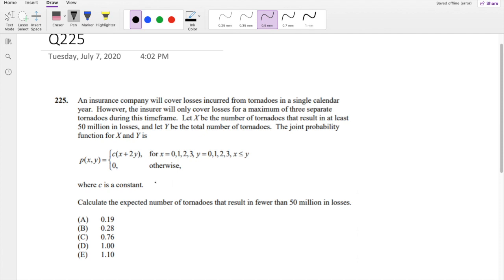They give you the joint probability function to be this, but this is only true when x is less than or equal to y. So this means the options are pretty limited, right? We can have 0, 0, we can have 0, 1, all the way to y holds values up to 3. So we can go up to 3.